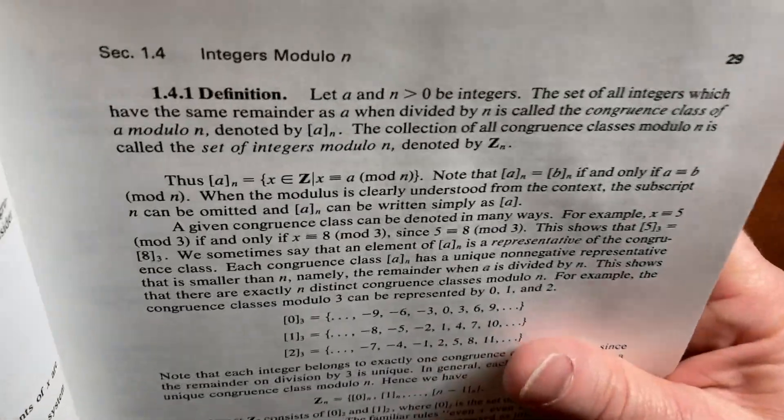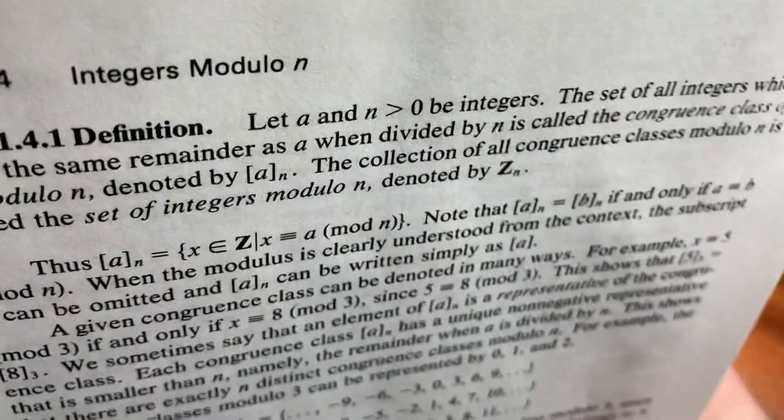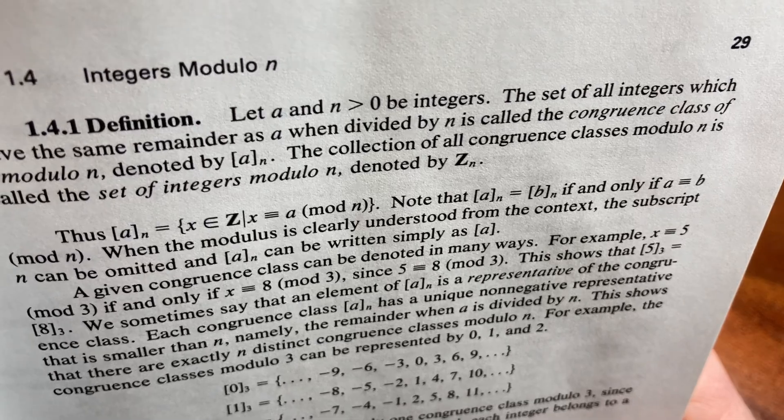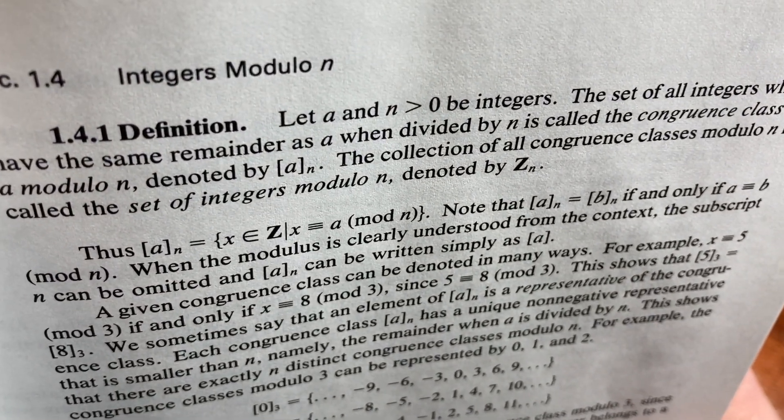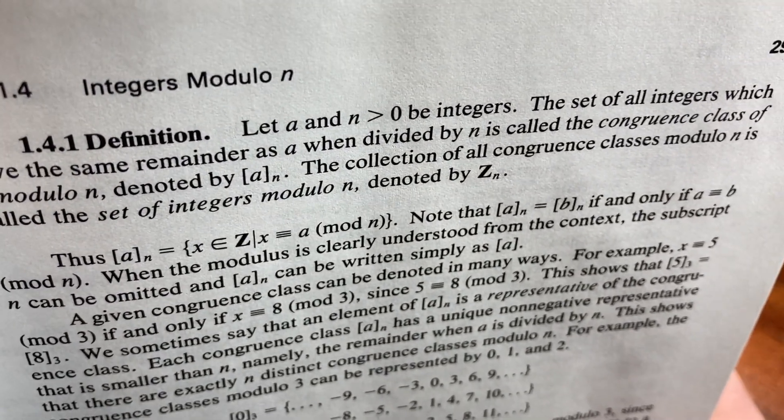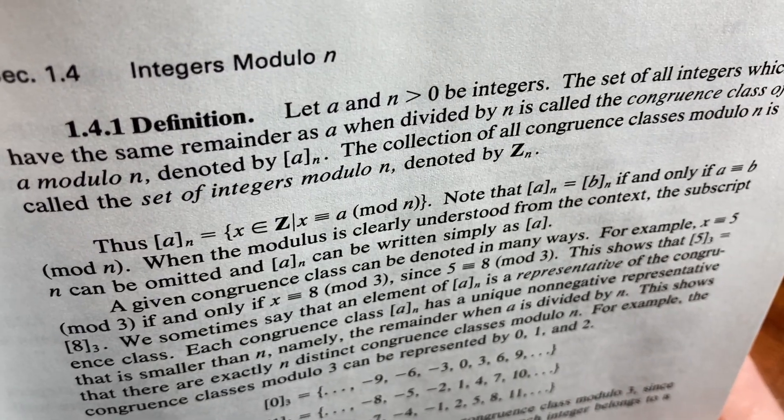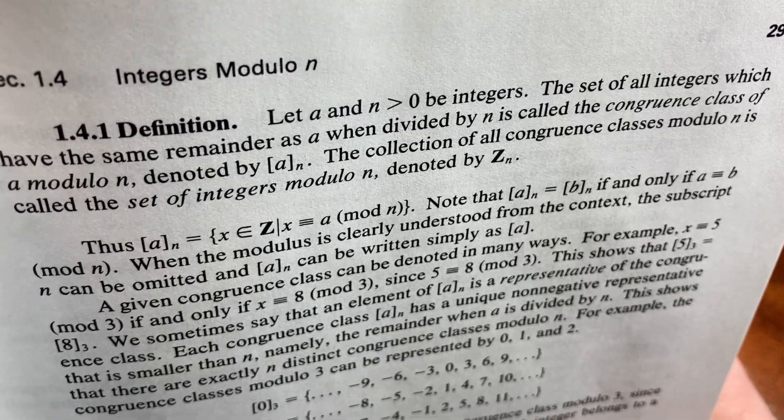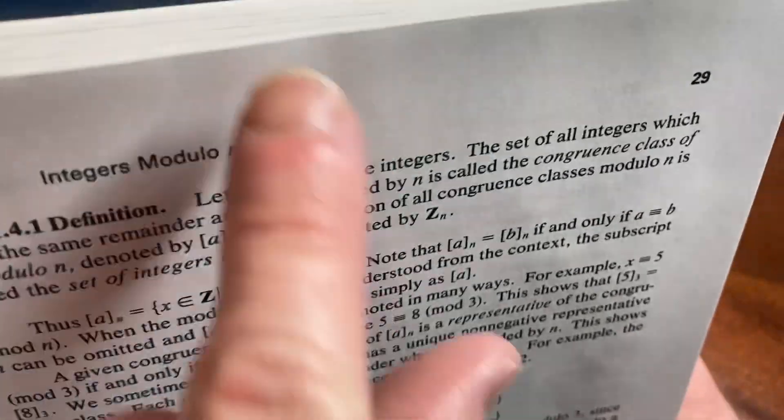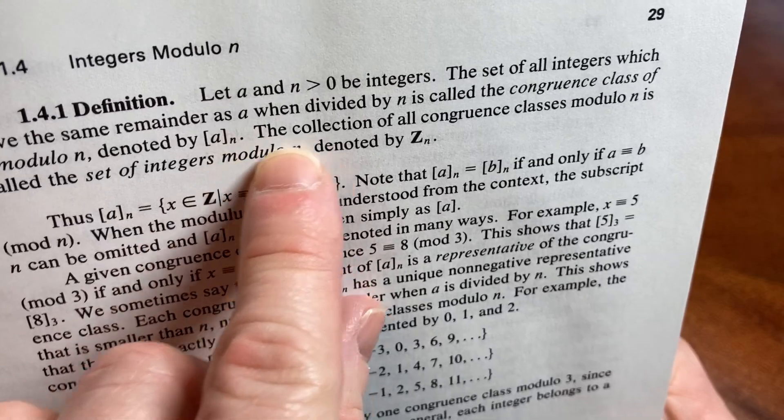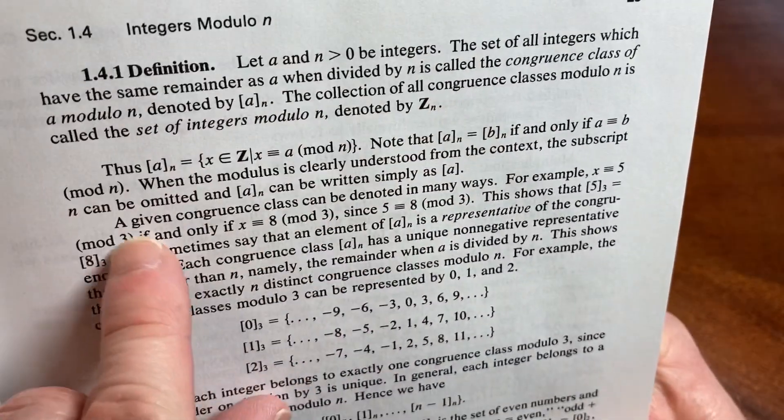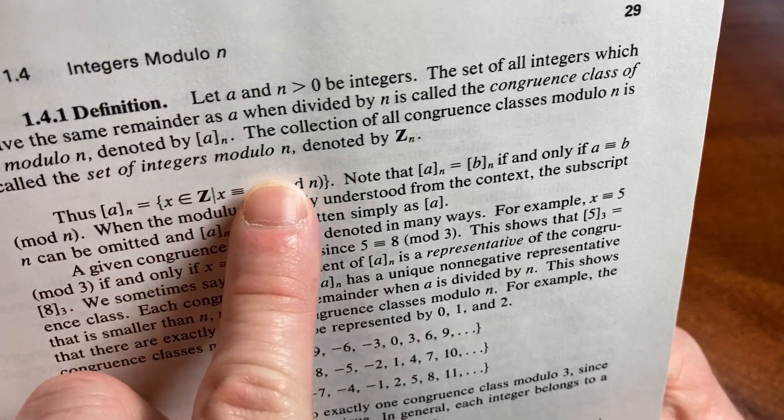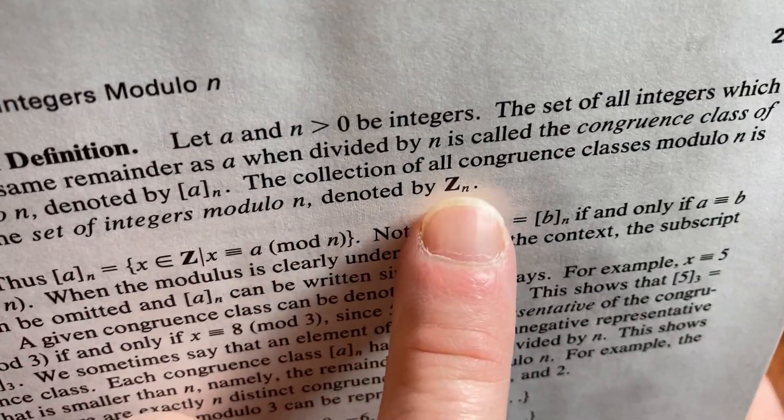Let's go back up here to the beginning. Let a and n greater than 0 be integers. This is worth trying to understand. The set of all integers which have the same remainder as a, when divided by n, is called the congruence class of a modulo n, denoted by, and there it is, right? That's the congruence class of a modulo n. That's what that is right there, okay? The collection of all congruence classes modulo n is called the set of integers modulo n, denoted by z sub n.